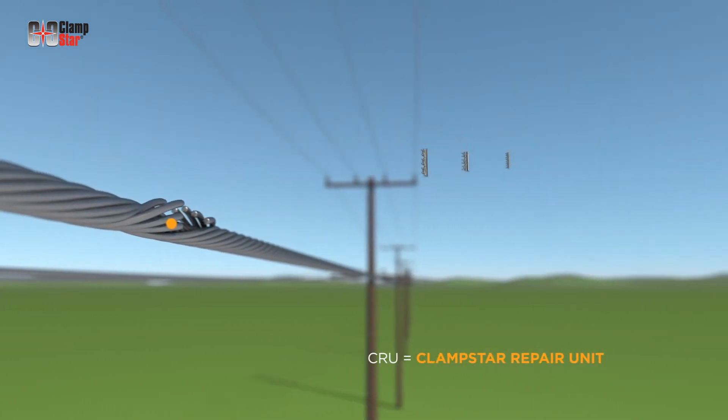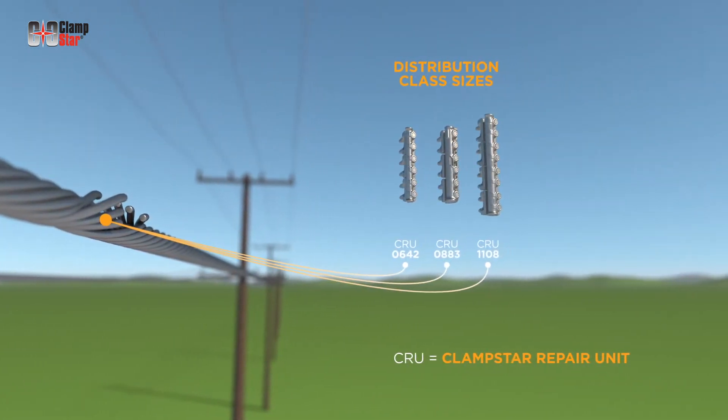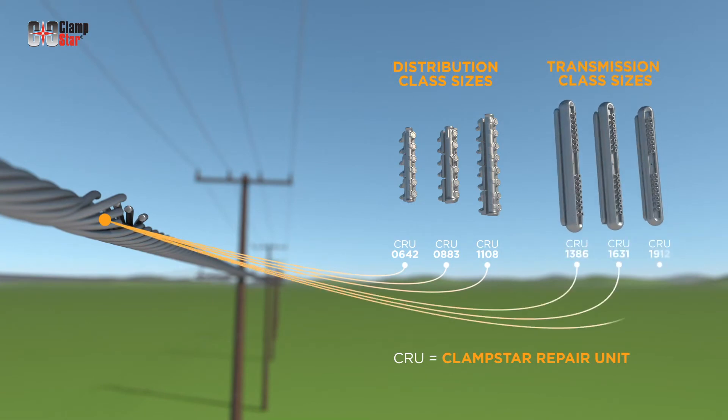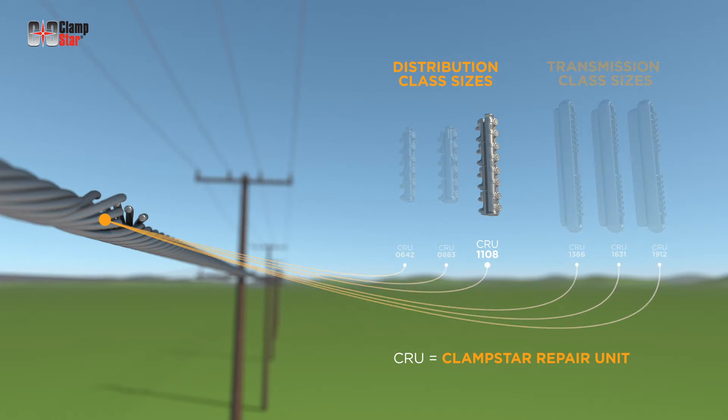ClampStar Repair Units are available in three distribution class sizes and three transmission class sizes. All ClampStar Repair Units will restore the conductor to full tension. This installation will be done using a distribution class unit.